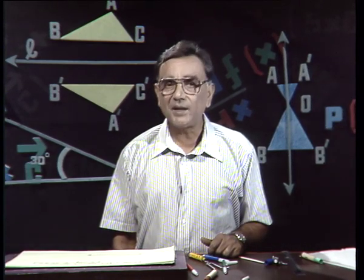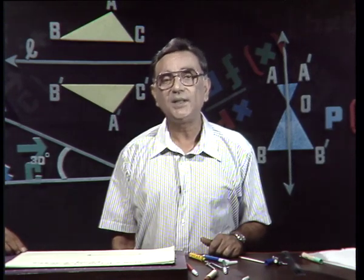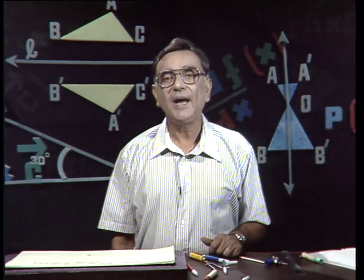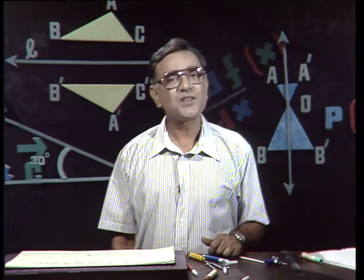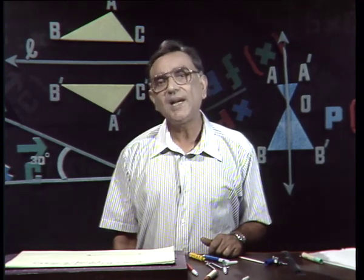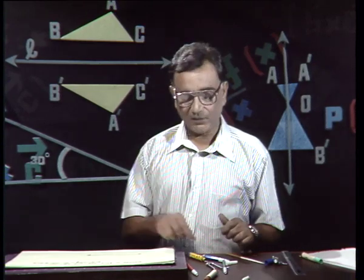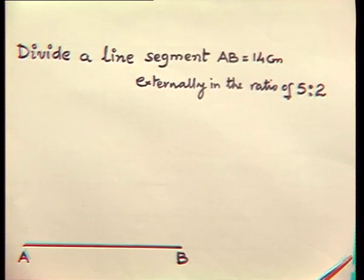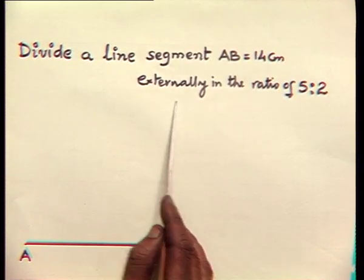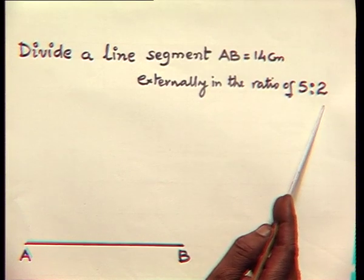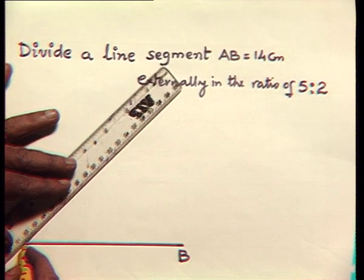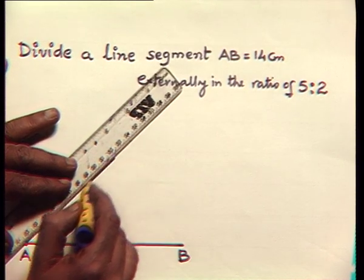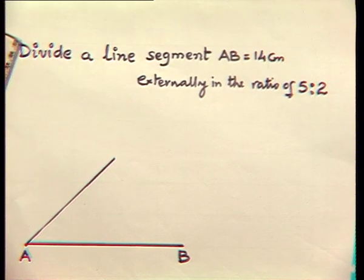But it may not always be the case — we may have to divide the line externally in a particular given ratio. Let us see how we do that. Here: divide a line segment AB of 14 centimeters long externally in the ratio of 5 is to 2. The same way, first I will draw a convenient acute angle at A. Then we cut five parts on this: one, two, three, four, five.